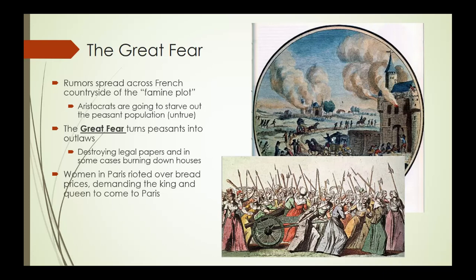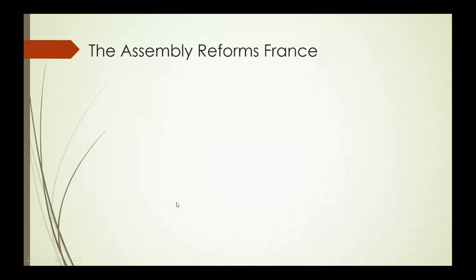This is something we see in revolutions across time — the Russian Revolution of 1917 is another good example. There are people who believe that in order to have a true revolution, you really need to tear down society and completely rebuild it. Another instance are the women in Paris who are rioting over bread prices, demanding that the king and queen come to Paris. They storm the Palace of Versailles — it looks like if they find Louis XVI or Marie Antoinette, they're just going to tear them apart. So it's just getting more and more radical.